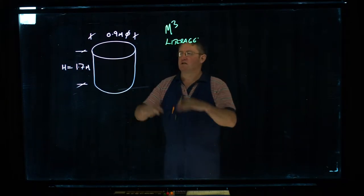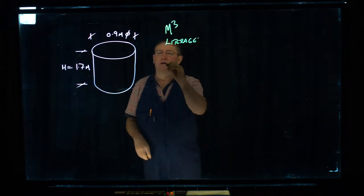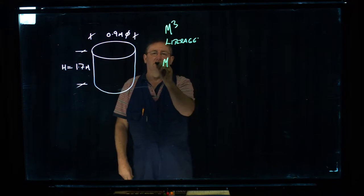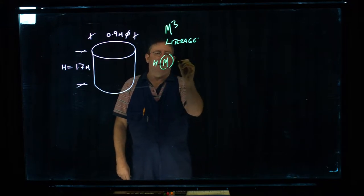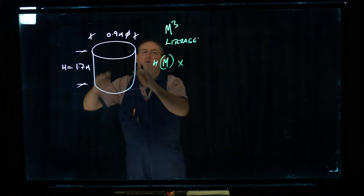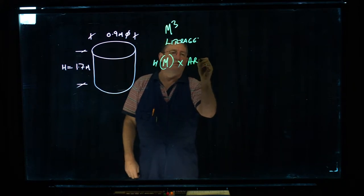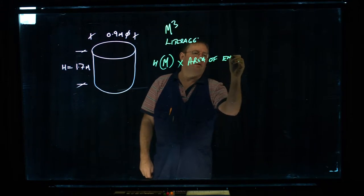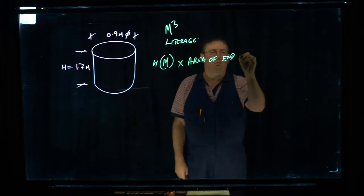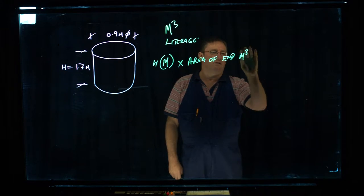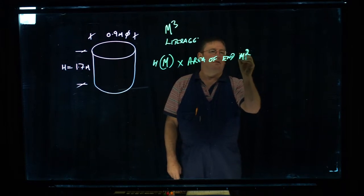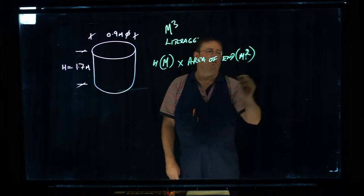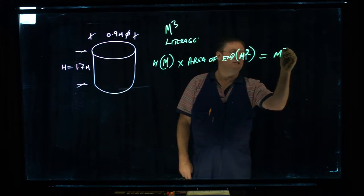So when we have a cylinder, just as a refresher, we take the height in metres and we times it by the area of the end. And if we do that, we get metres squared, and when we times those two together, the height by the area of the end, we end up with metres cubed.